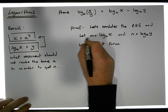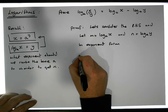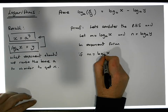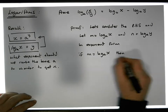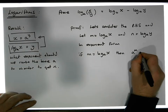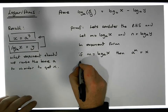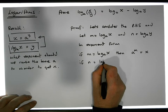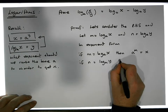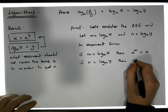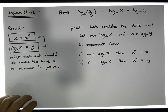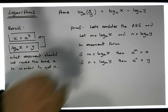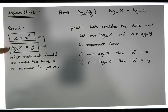In exponent form: if m is equal to log of x to the base a, then we must have that a to the power of m is equal to x. And if n is equal to log of y to the base a, then a to the n is equal to y. This is a consequence of these two statements, because that's what we defined a logarithm to be.